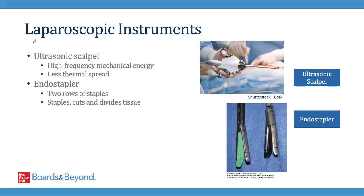Another laparoscopic instrument is the ultrasonic scalpel, whose purpose is similar to electrosurgical equipment in that it's used to coagulate blood vessels and assist with dissection. But instead of using electricity to generate heat, it relies on high-frequency mechanical energy to generate the heat needed to damage tissues, and in doing so it exerts less thermal spread. Just like there are staplers used for open surgery, there are endo-staplers used for laparoscopic surgery — these fire two rows of staples and then cut and divide the tissue in between the staple rows. And that concludes our module on surgical instruments.